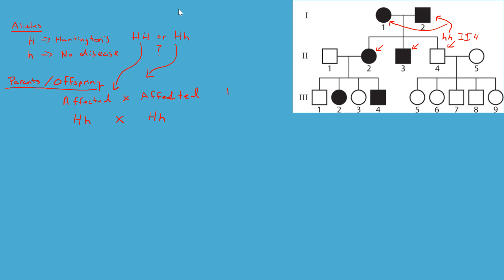Let's double-check this with a Punnett square, because that's always a good idea. If I cross big H, little h with big H, little h, what are my expected offspring? One offspring is fully affected (big H, big H), two are affected (big H, little h), and one in four offspring are unaffected (little h, little h). Similar result here — they got one in three affected. That unaffected individual is little h, little h, and no one is affected on that side of the family.